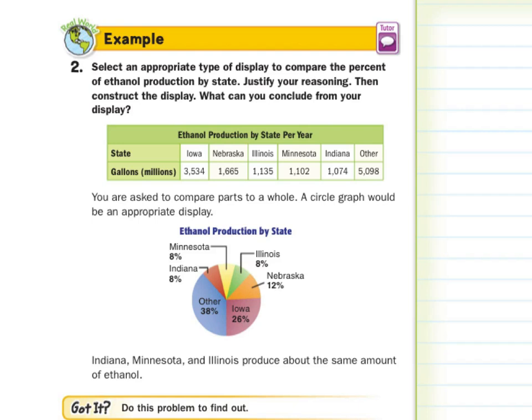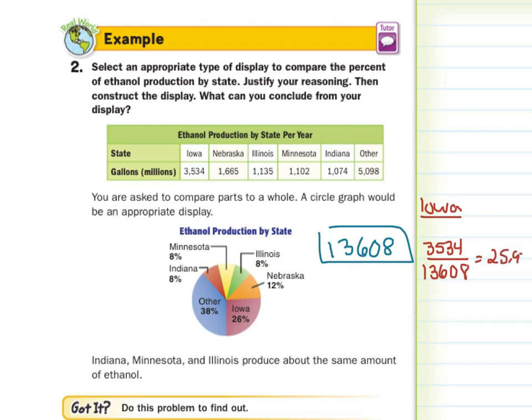Now, in order to calculate this, in case you need to draw your own circle graph, I would add up all the millions of gallons here. And that sum is 13,608. And then for Iowa, for example, I would take 3,534 and divide by 13,608. And this gets us about 25.97%. And when you can look at Iowa here on the graph, it indicates 26%. So that's how they got that 26%. And it takes up about 26% of the graph.